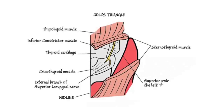And for the external branch of the superior laryngeal nerve, we have Joel's triangle, laterally bounded by the upper pole of the thyroid and superior thyroid vessels, superiorly by the strap muscles and deep investing layer of fascia to the hyoid, medially by the midline, and the floor is the cricothyroid muscle.